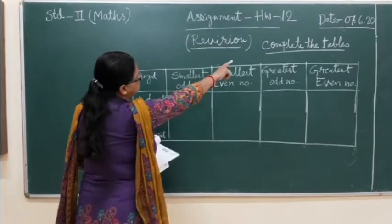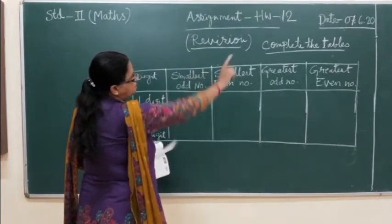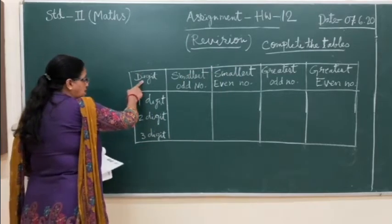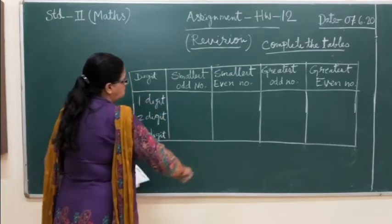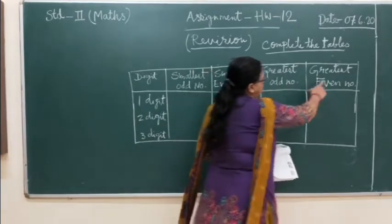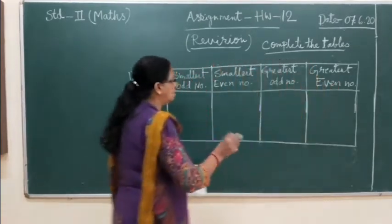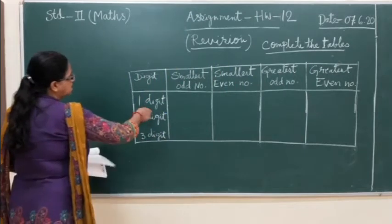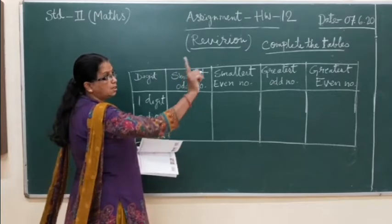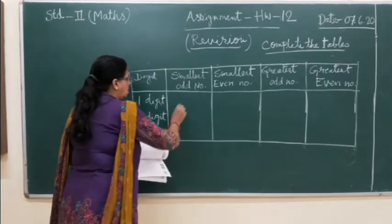Let's start the next question. Complete the table. What is given? First digit, smallest odd number, smallest even number, greatest odd number, greatest even number. So let's start. 1 digit, smallest odd number: the smallest number is 1, that is odd. So the answer will be 1.